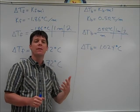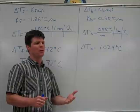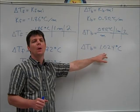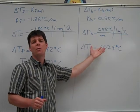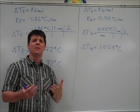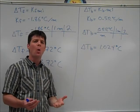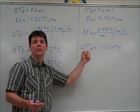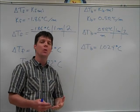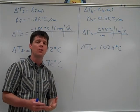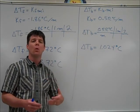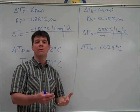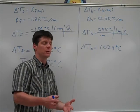This is not actually the new boiling temperature. 1.024 degrees Celsius is the change in boiling temperature. We need to add this to the normal boiling temperature of 100 degrees Celsius in order to determine the actual boiling temperature of this salt water solution.